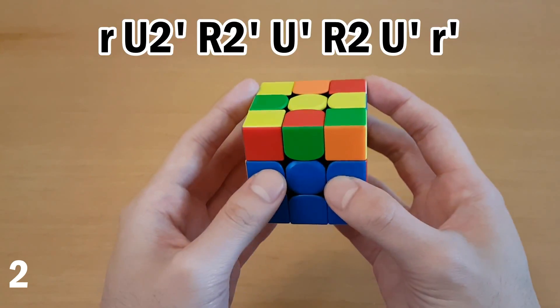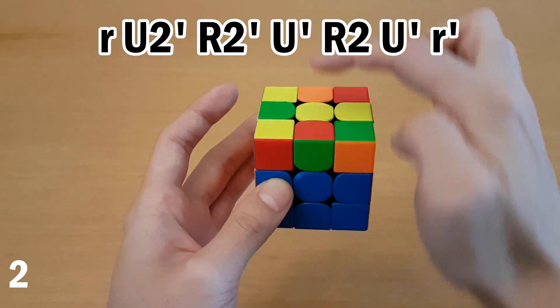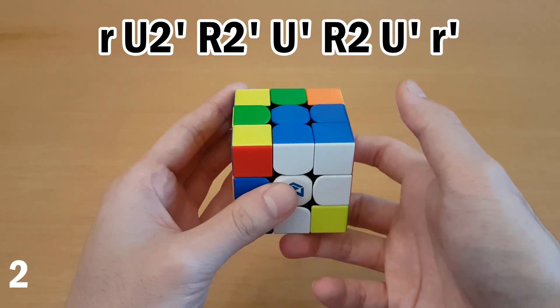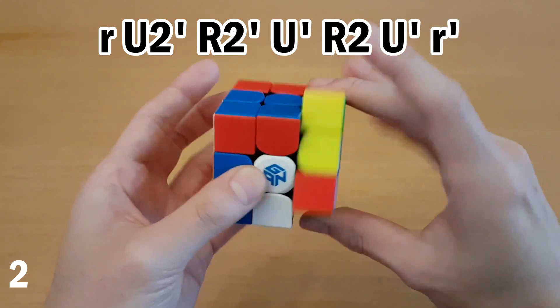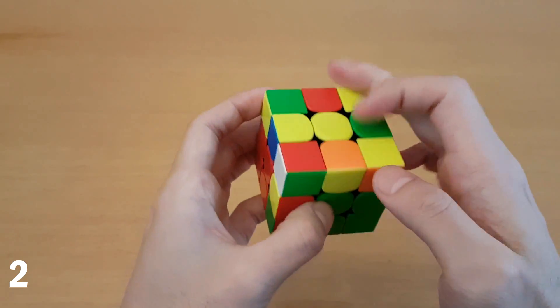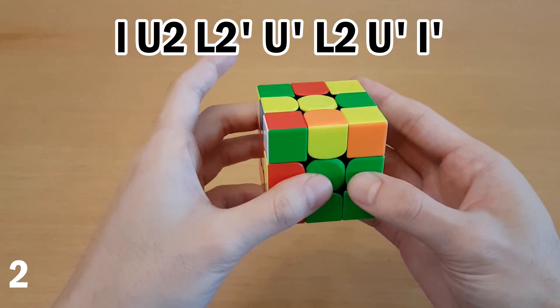So in this case we would do the exact same thing but start with a wide move. That way the edge ends up here. So wide move and then just the same idea. Now if you get this pair from the front you can do the same thing.